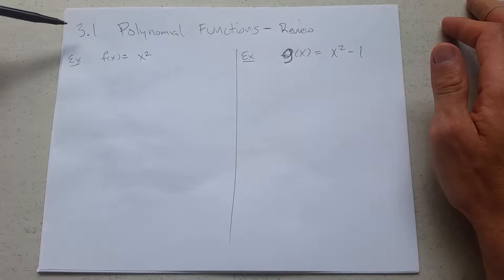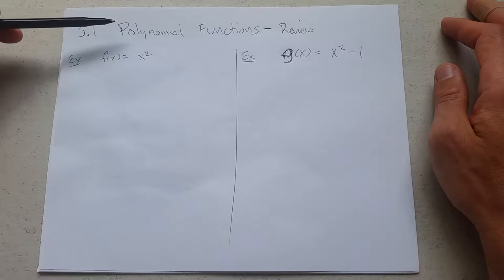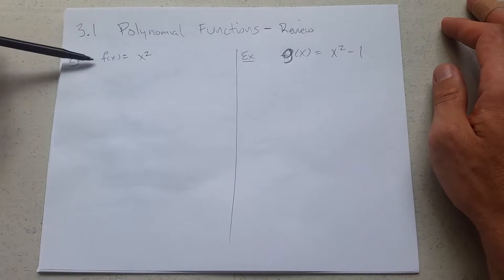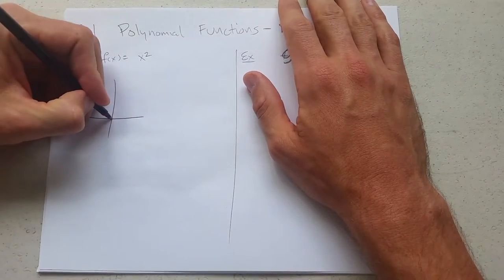Before we get into chapter 3, I'm going to do a review of how polynomials relate back to quadratics. So we'll start with the x squared function that's a regular parabola, and we've seen this graphed.